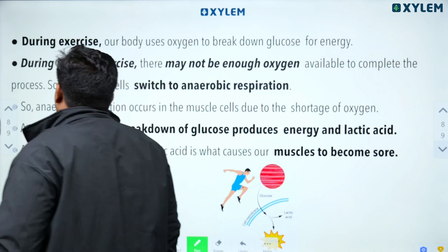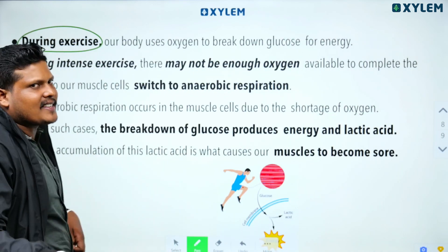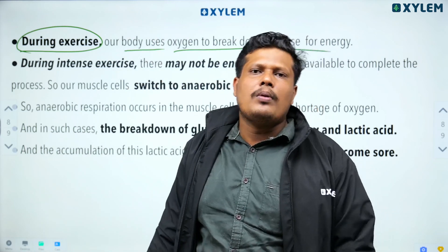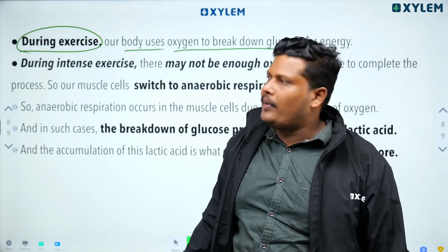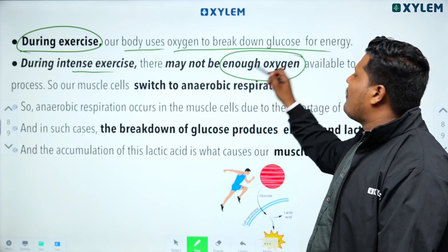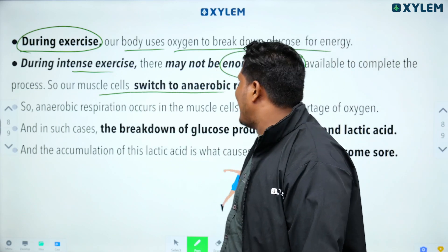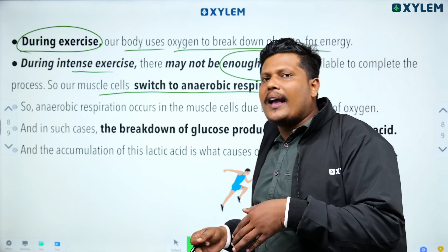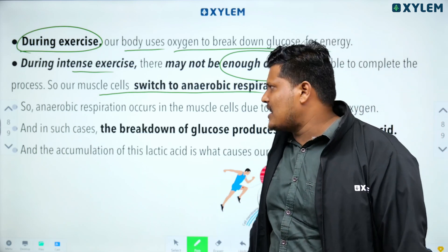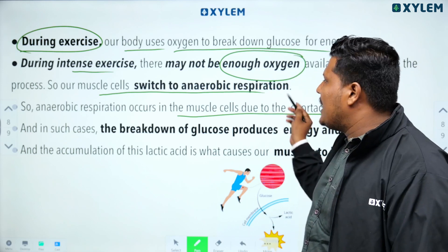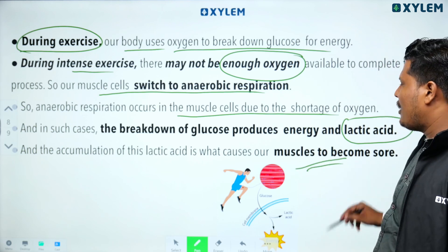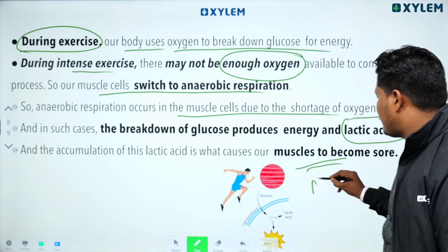During exercise, our body uses oxygen to break down glucose for energy — that is aerobic respiration. During intense exercise, our muscles may not get adequate oxygen, so they switch to anaerobic respiration. At that point, lactic acid is deposited in the muscle cells, causing muscle pain or muscular cramps.